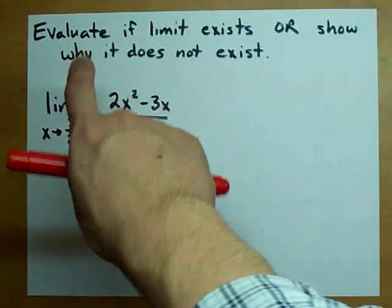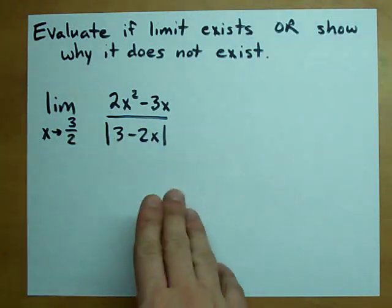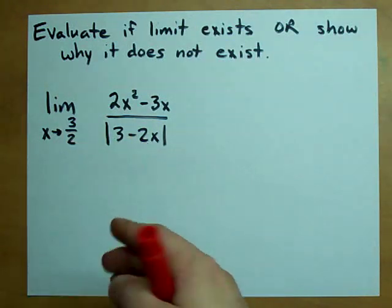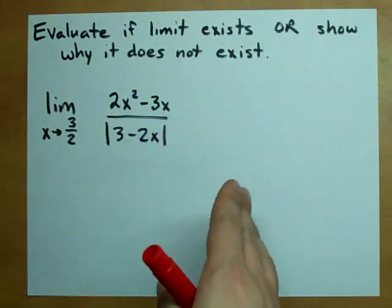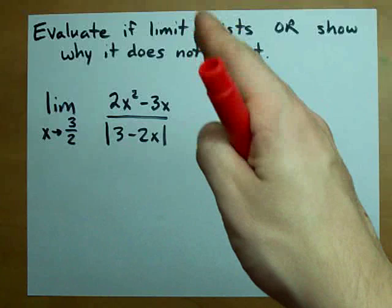Couple things to note. x equals 3 halves doesn't exist here because it makes the denominator 0. But it may just be a hole in the graph. It may not be a case of it being an asymptote.